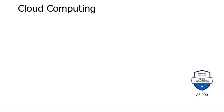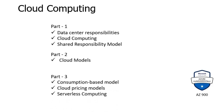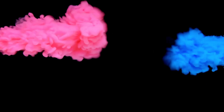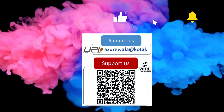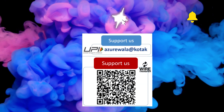This video concludes our cloud computing chapter. In Part 1, we discussed data center responsibilities, cloud computing, and the shared responsibility model. In Part 2, we discussed cloud models such as public cloud, private cloud, and hybrid cloud, as well as the multi-cloud concept and Azure Arc. In Part 3, we discussed the consumption-based model, cloud pricing model, and serverless computing. I hope this video was informative. Please hit the like button, subscribe to my channel, and press the bell notification icon. Thank you for watching — see you in the next video.